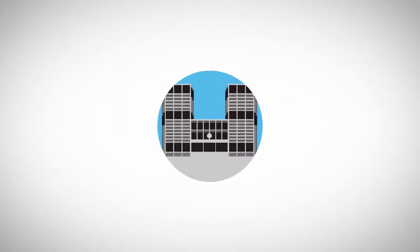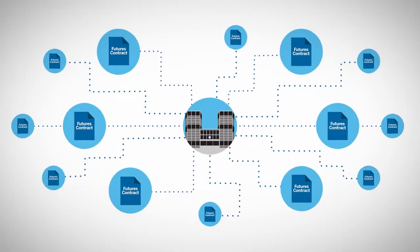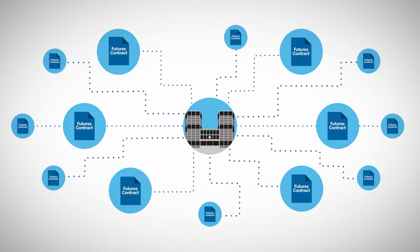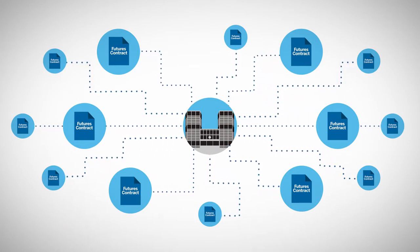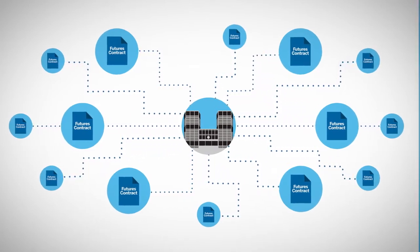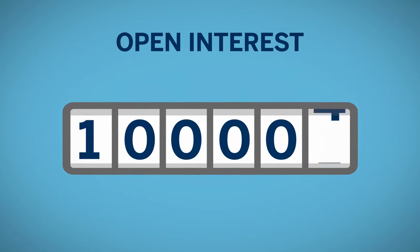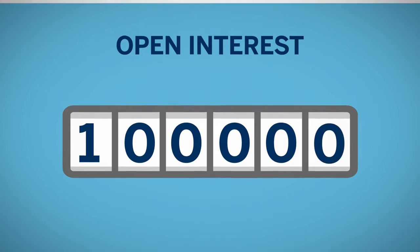Unlike the total issued shares of a company that typically remain constant, the number of outstanding futures contracts varies from day to day. Open interest is calculated by adding all the contracts from open trades and subtracting the contracts when a trade is closed.